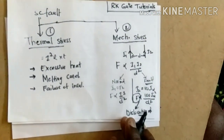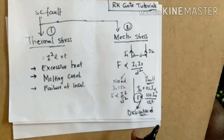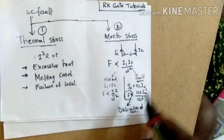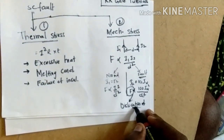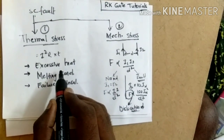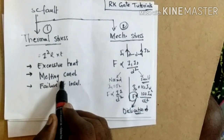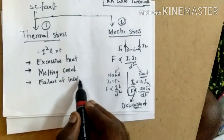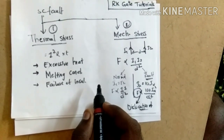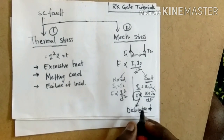Due to this enormous increase in force, there is dislocation of the insulation and conductor. These are the two consequences due to the short circuit fault: thermal stress causes excessive heat, melting of conductor, and failure of insulation; mechanical stress causes dislocation of the conductor and insulation. These are the two important things to remember.